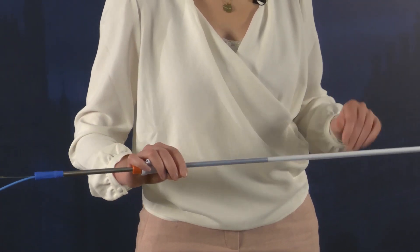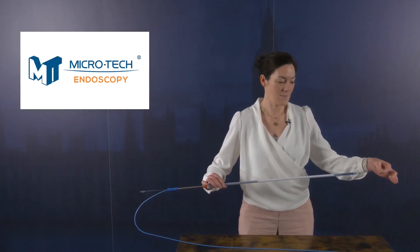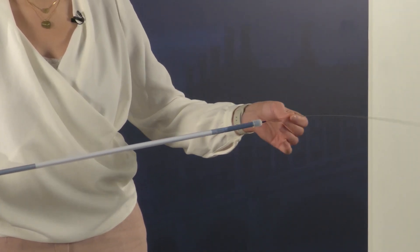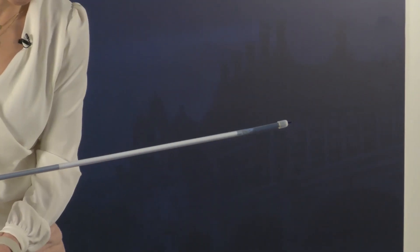Once everything is flushed and the guide wire is in the patient, you need to remove this iron thing from the stent. This is just for packaging so it stays straight. Once that's out,